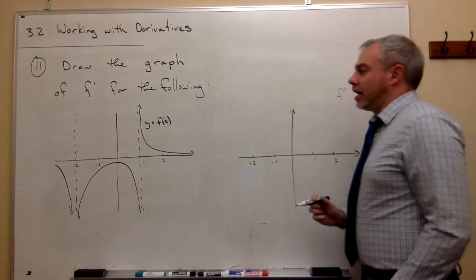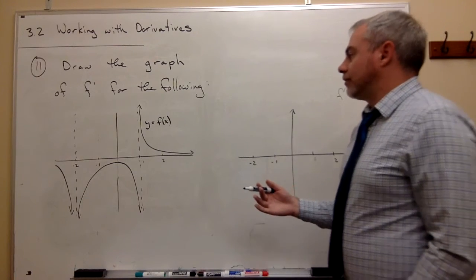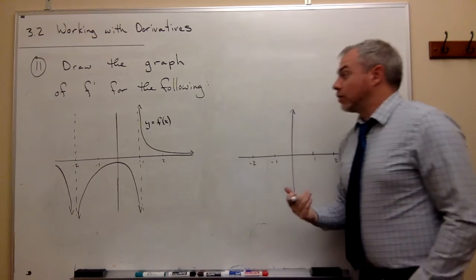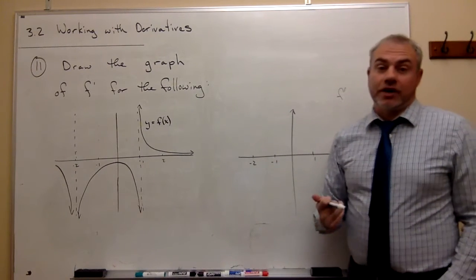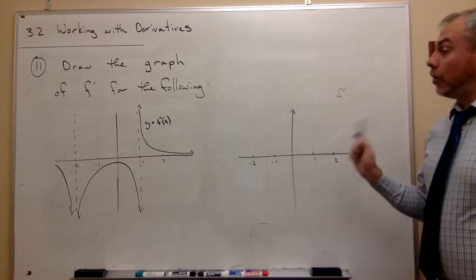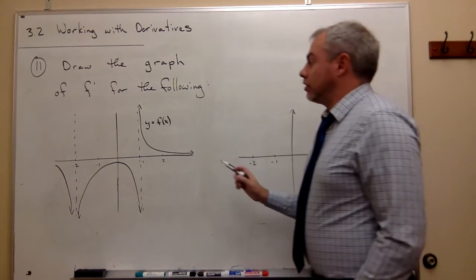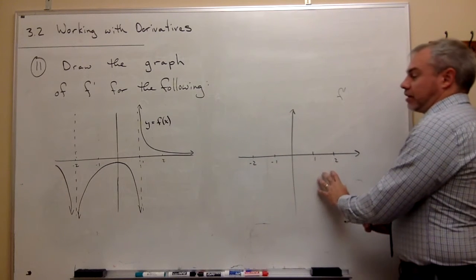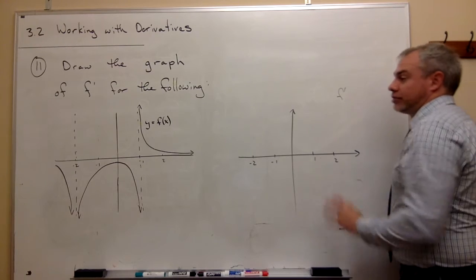So first of all, there is no functional value for this graph at negative 2 or at 1. So we're not going to have a derivative value there either. So what we're going to do is we're just going to look at where this thing does have slope and graph that over here on this f prime function.